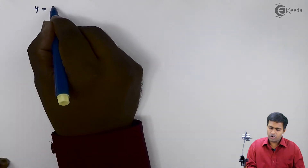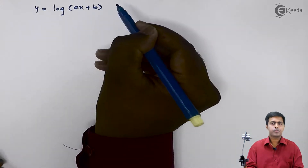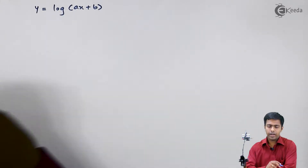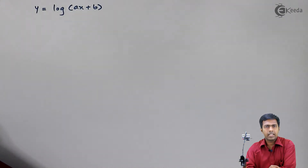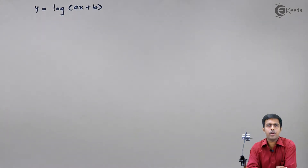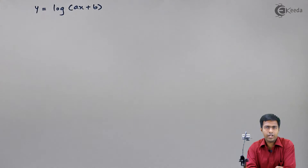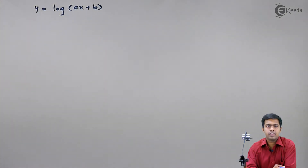The function is y equal to log of (ax plus b). To find out the nth derivative of this, we will use one approach: we will find out the first derivative y1, then from y1 we will find the second derivative y2, then from y2 we will find the third derivative y3. And from the answers of y1, y2, and y3, we will predict what could be the value of yn.